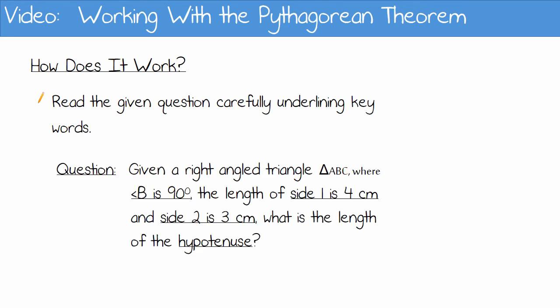Given a right-angled triangle, Triangle ABC. Angle B is 90 degrees. The length of side 1 is 4 centimeters. The length of side 2 is 3 centimeters. What is the length of the hypotenuse?